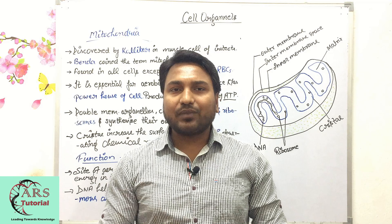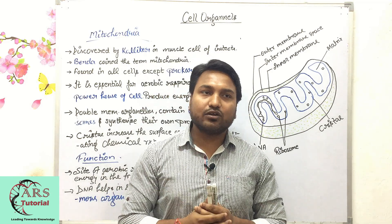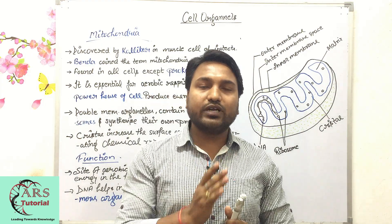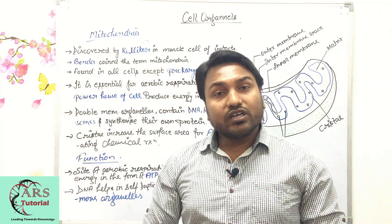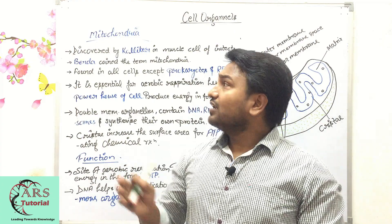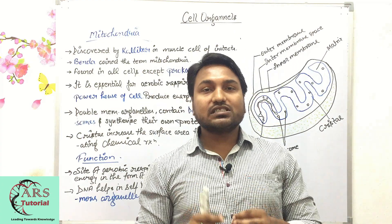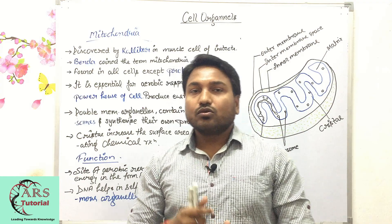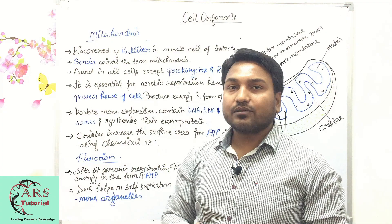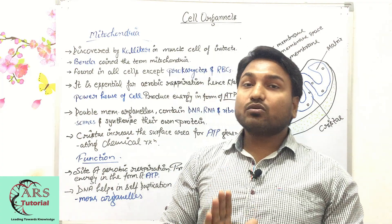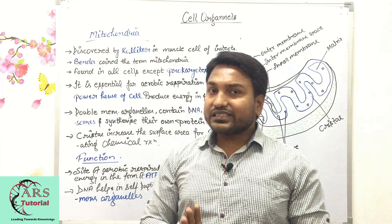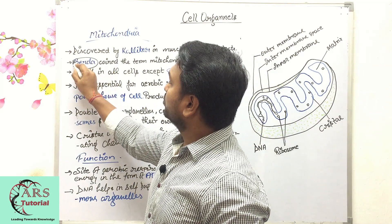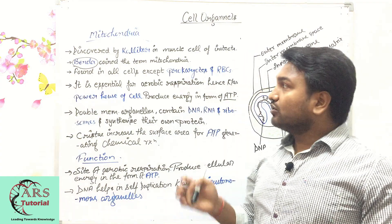First of all, we should know who discovered mitochondria and who gave the name — the term 'mitochondria' — because there are two different scientists who discovered it and one scientist who named it. Mitochondria was first discovered by Koliker while studying muscle cells of insects. However, Koliker did not give it its name.